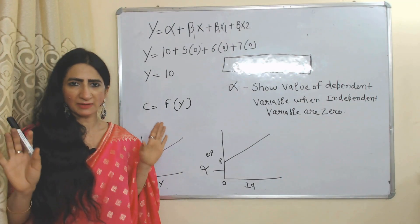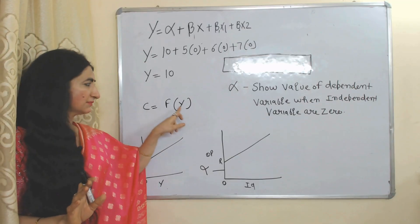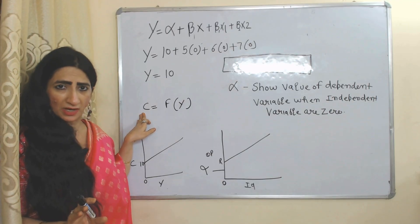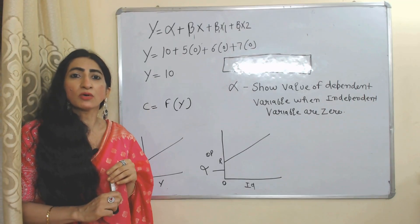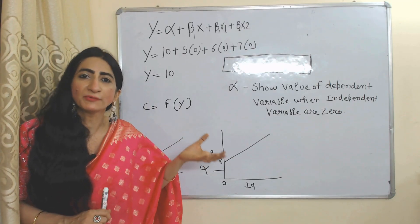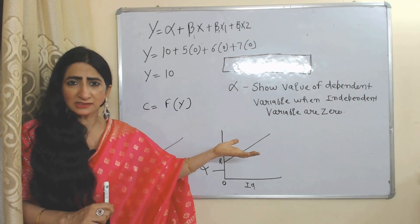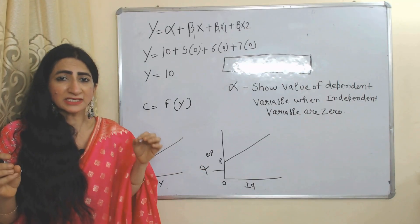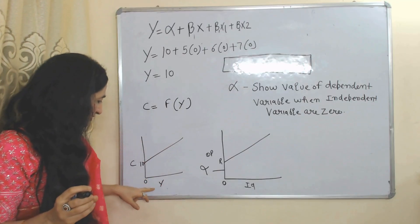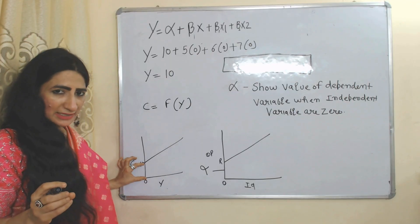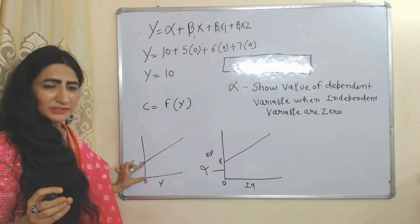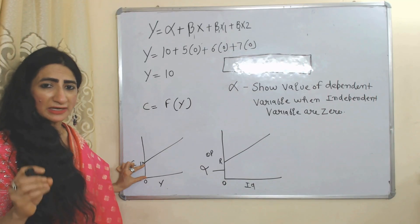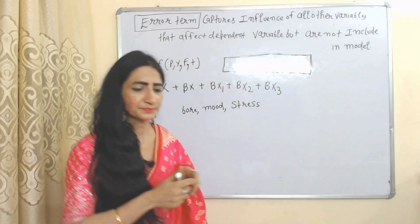Now we understand intercept with the help of an example. Consumption is the dependent variable and income is the independent variable — consumption depends on income. If income is 0, then consumption should also be 0, but it is not. Why? Because in order to survive, an individual has to buy food — either from past savings or by taking money from someone else. This expenditure is called the intercept. Here you can see when income is 0, still the consumer is doing 10 units of expenditure. This part is called autonomous consumption, or the intercept, because intercept shows the value of the dependent variable when the independent variable is 0.